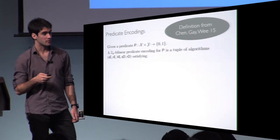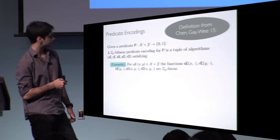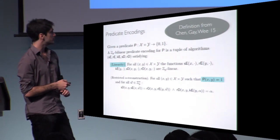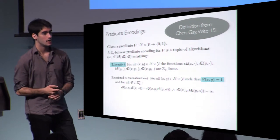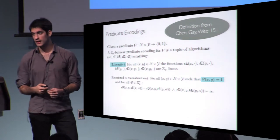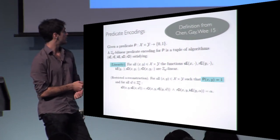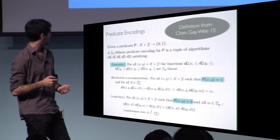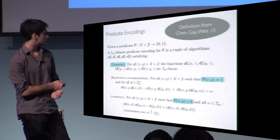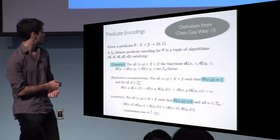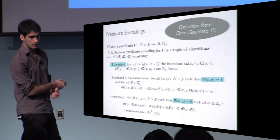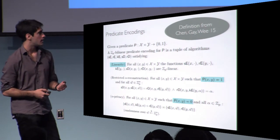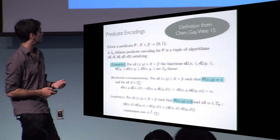These algorithms must satisfy three properties. First, they must all be linear in the last component. The second property is called alpha reconstruction: when the predicate is true, a certain equation holds. You can think of alpha as a secret that allows you to decrypt, so when the equations hold you can compute alpha in the exponent and therefore decrypt. The third property is alpha privacy: when the predicate is false, two certain distributions are identical, and since alpha appears only on the left-hand side, this means alpha is information-theoretically hidden — which is what allows you to argue security.